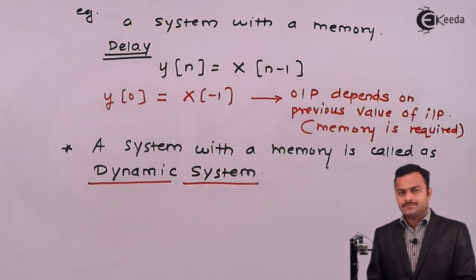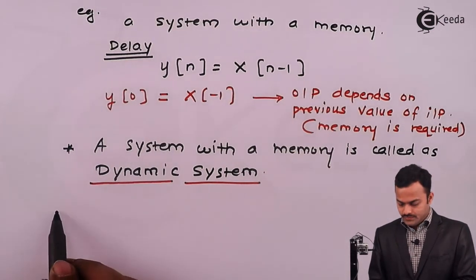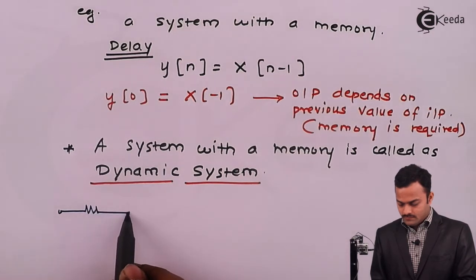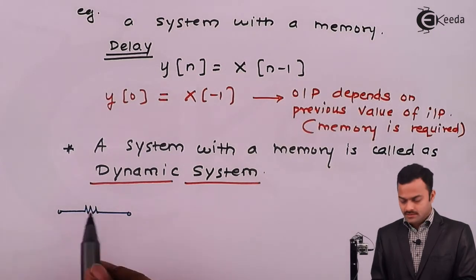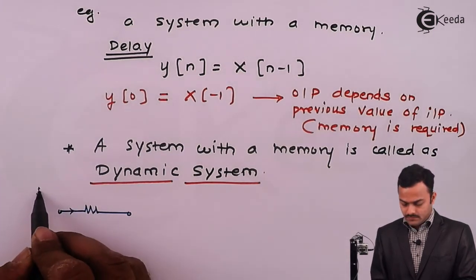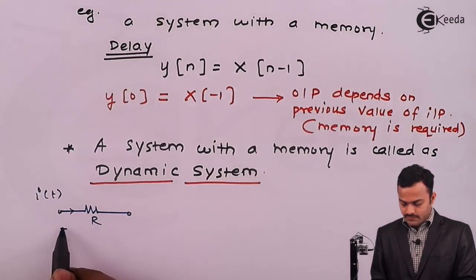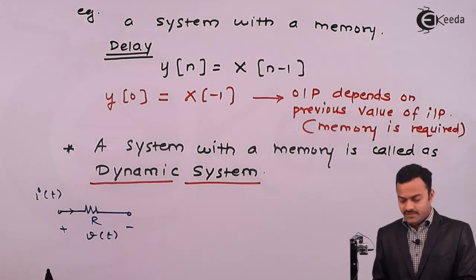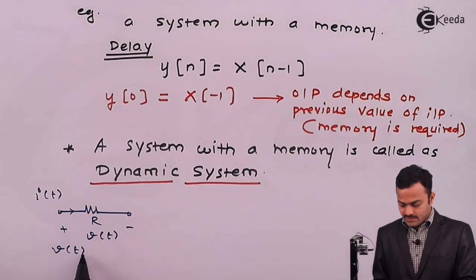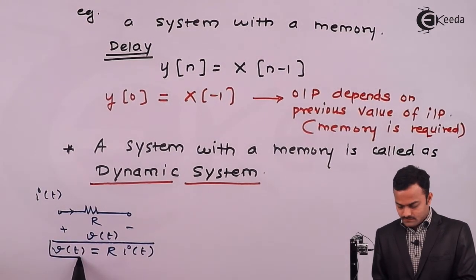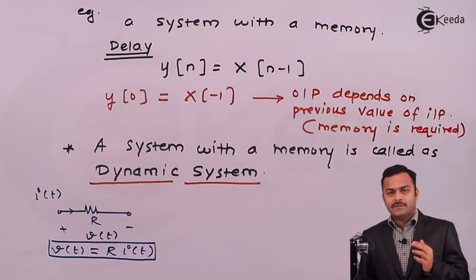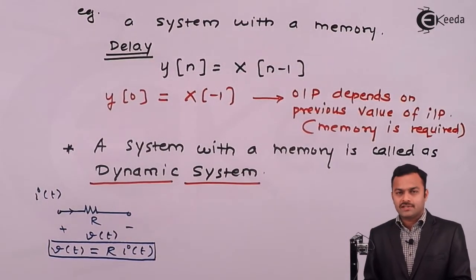Let's take an example in a continuous time domain. I will take an example of a resistor. A resistor is there and for the resistor I am having a current I of t so that it will give a voltage V of t. I can say V of t is a system with equation R into I of t. So at any instant of time t if I want to know the voltage across the resistor I just need to know what is the current flowing through the resistor at that particular instant.